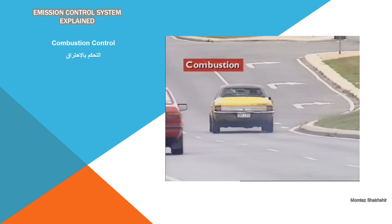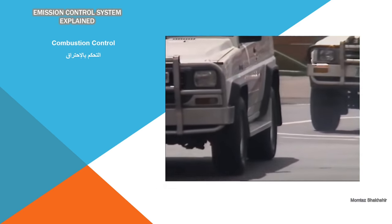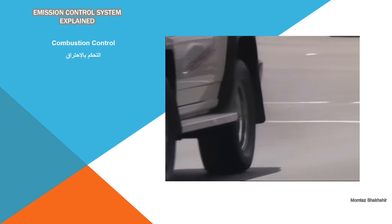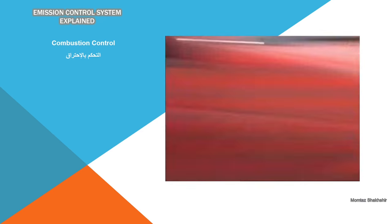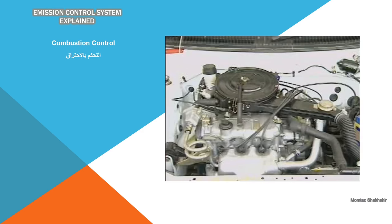This section examines combustion control. Approximately 60% of emissions from an uncontrolled vehicle engine come from the exhaust, as a result of combustion of the fuel and the air. To reduce these emissions, some devices or systems control the combustion process itself, while others treat the resulting exhaust gases. Most modern vehicles use a combination of both.